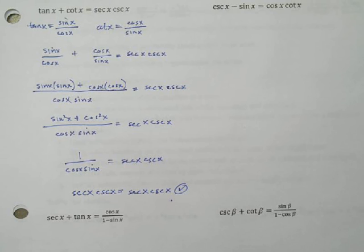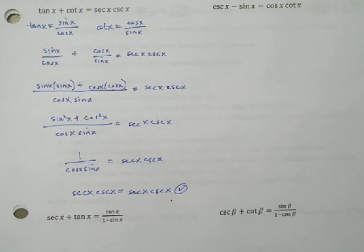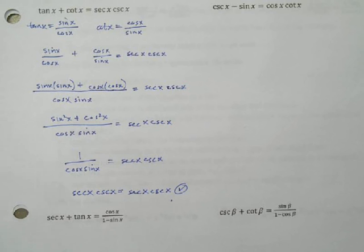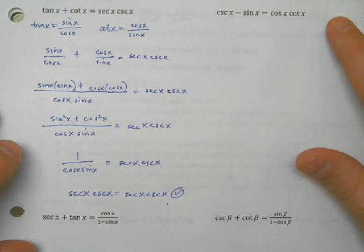There's one strategy to keep in mind: whenever we don't see any fractions, we don't see any squares, and we don't see any opportunities to multiply things out to create squares, my suggestion would be to convert everything into sines and cosines and start whittling it down from there.